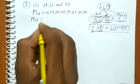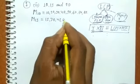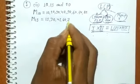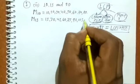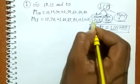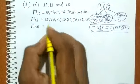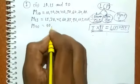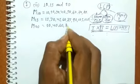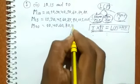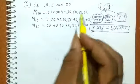Multiples of 15 are: 15, 30, 45, 60, 75, 90, 105, 120, and so on. Multiples of 20 are: 20, 40, 60, 80, 100, 120, 140, and so on.